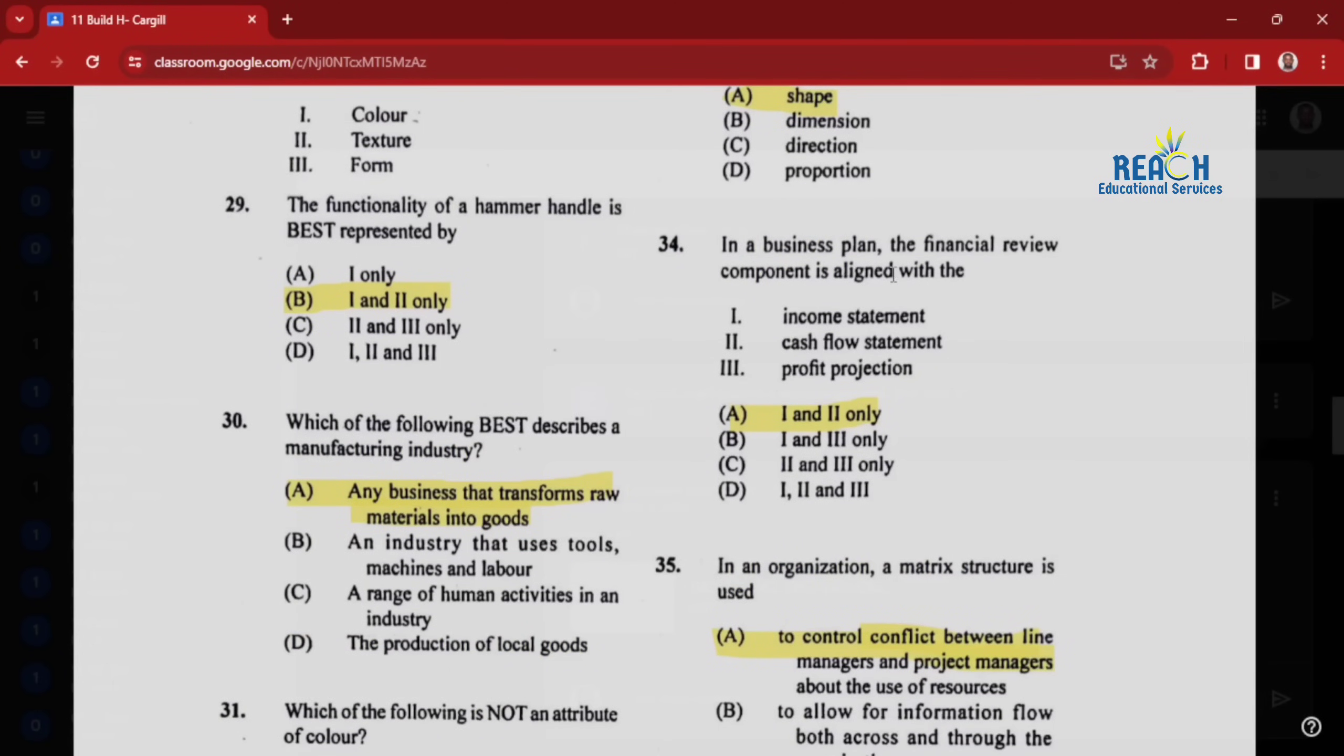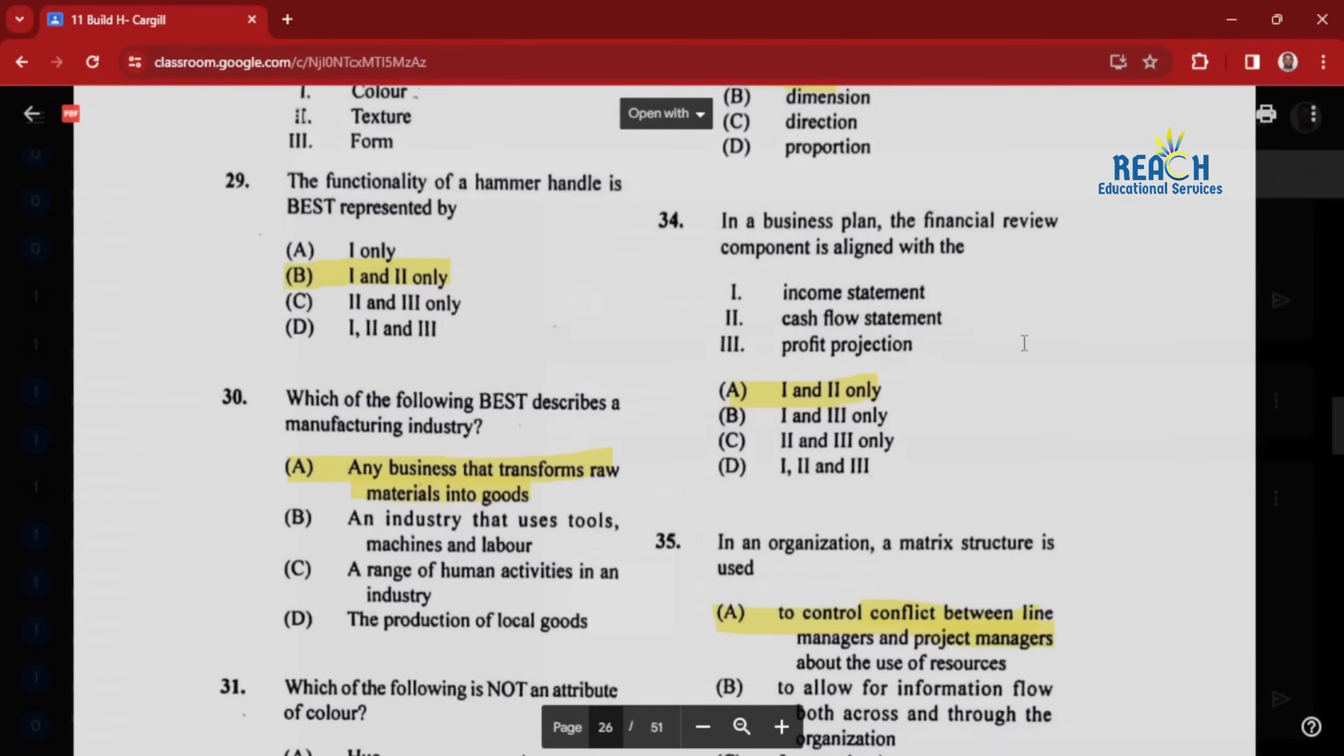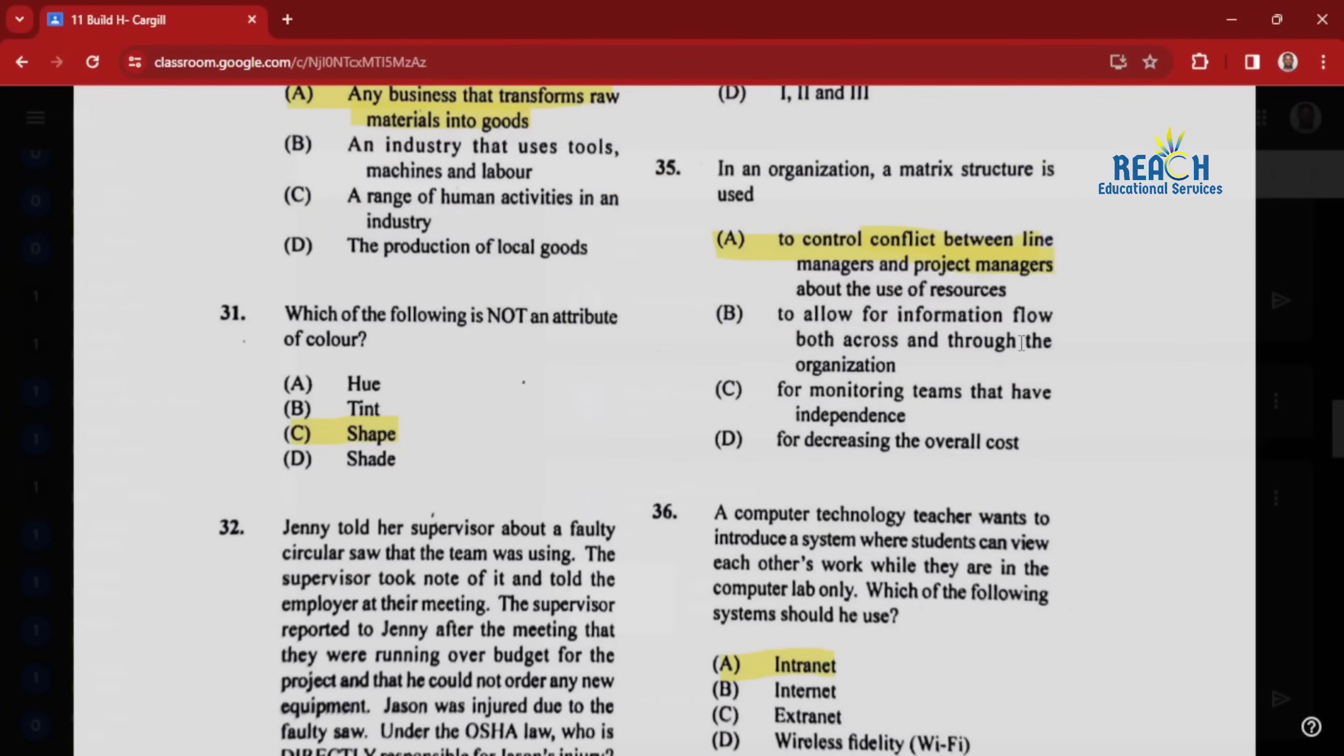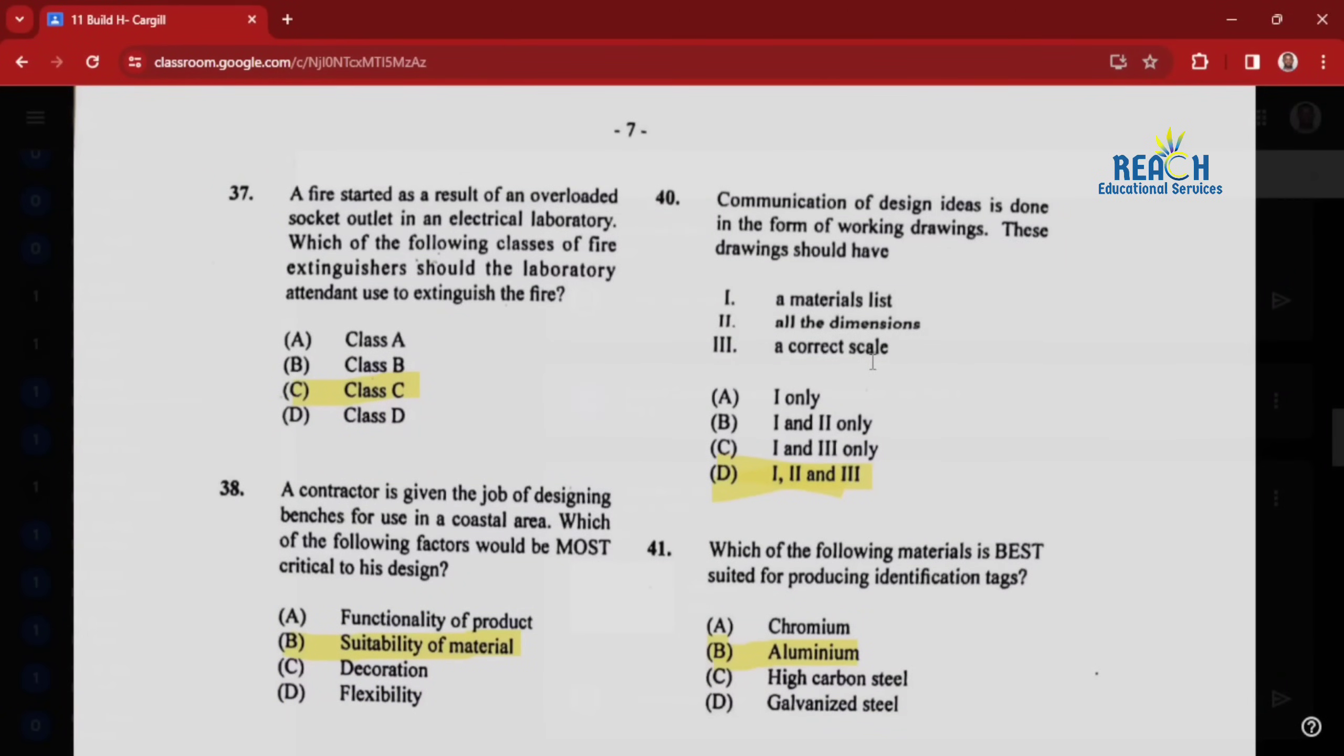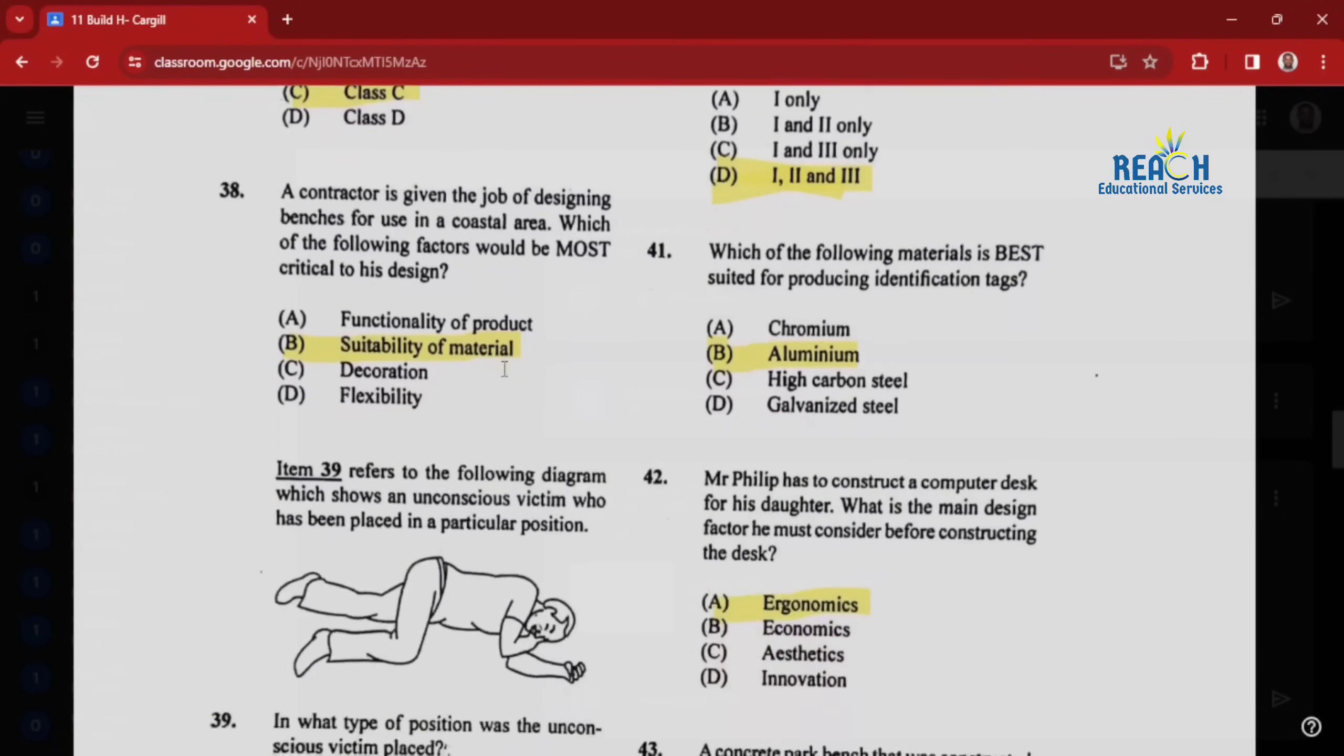In a business plan, the financial review component is aligned with the income statement, cash flow statement, and profit projection. It says one and two: income statement and cash flow statement. Question thirty-five: in an organization, a matrix structure is used to control conflict between line managers and project managers. Question thirty-six: a computer technology teacher wants to introduce a system where students can view each other's work while in the computer lab only. Which system should be used? That would be an intranet. Question thirty-seven: a fire started as a result of an overloaded socket outlet in an electrical laboratory. Which class of fire extinguisher should be used? That would be a Class C fire extinguisher because you use those to put out Class C fires.